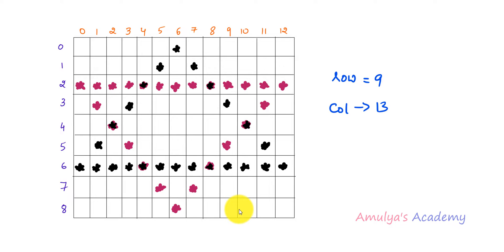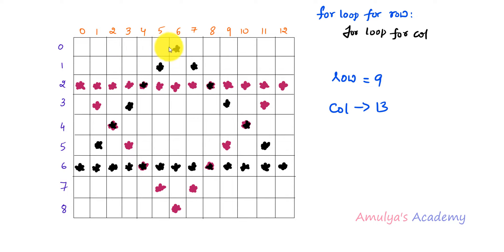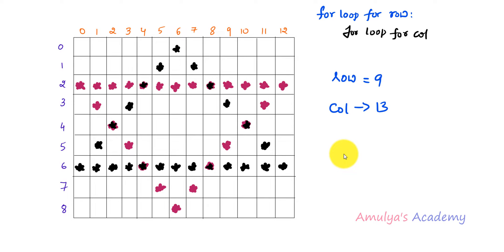For that I will use a nested for loop — that is one for loop inside another for loop. We will take the for loop for row first, and inside that I will take the for loop for column. We will start from row 0 and print space or star as required in each column. After completing every column of row 0, we go to row 1, and so on. That's why first we need the for loop for row, and inside that the for loop for column.